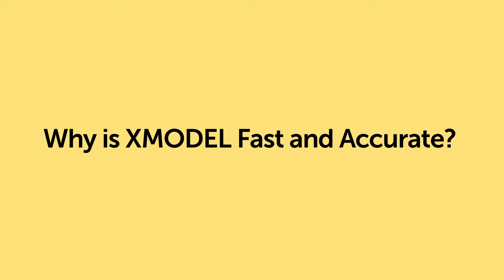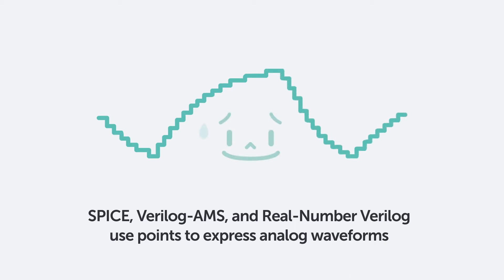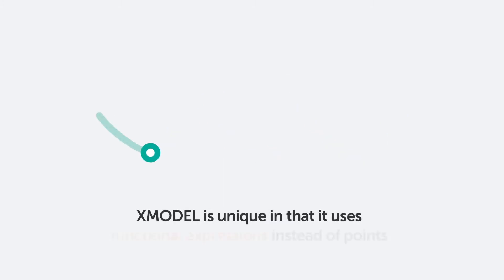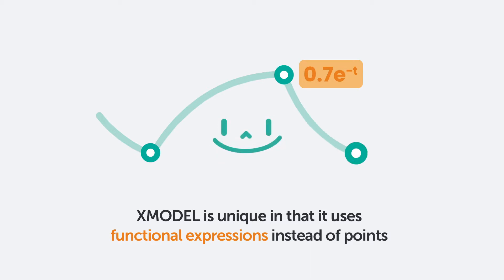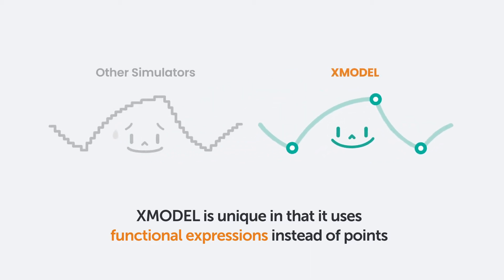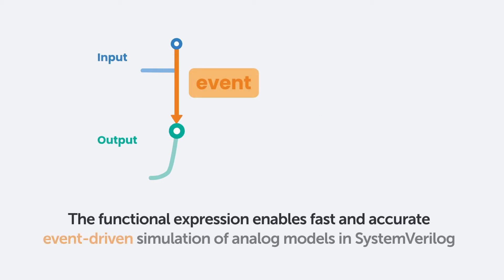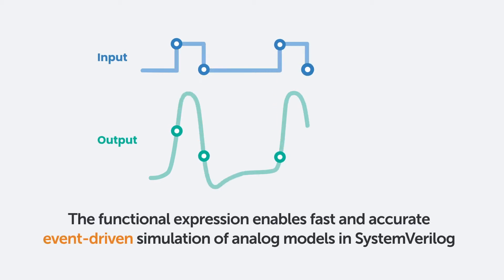Why is XModel so fast and accurate? Other simulators like SPICE, Verilog AMS, and Real Number Verilog all use points to express analog waveforms. XModel is different in that it uses functional expressions instead of points to describe the waveforms. This functional expression enables fast and accurate, event-driven simulation of analog models, all in SystemVerilog.